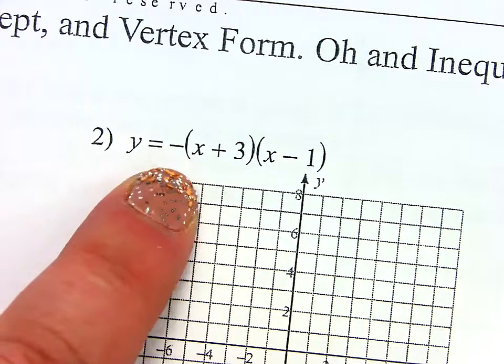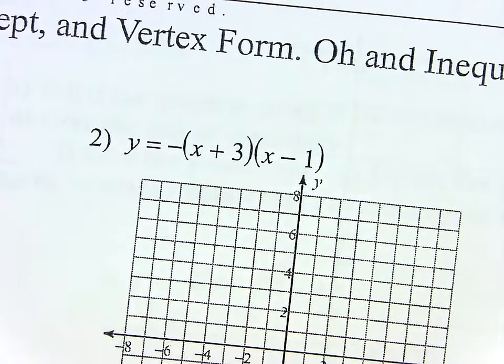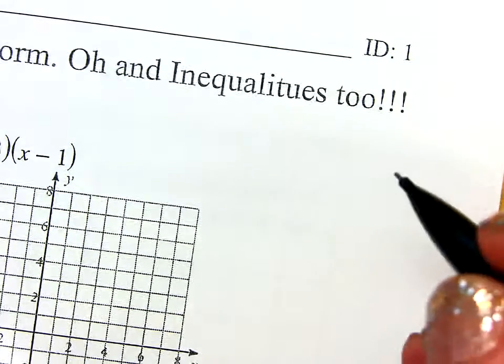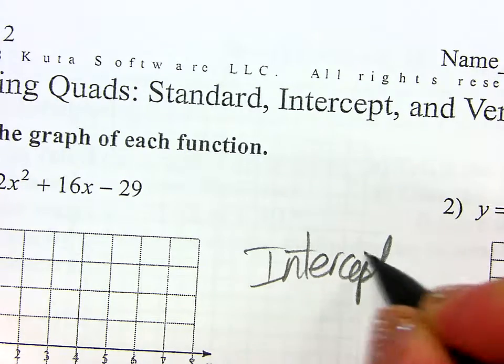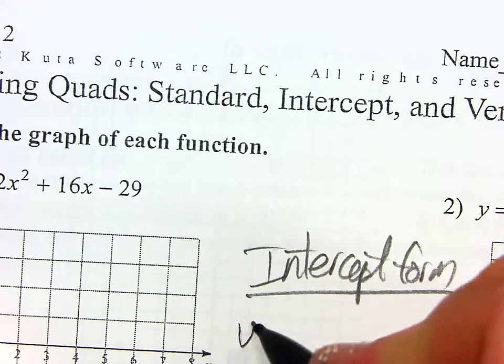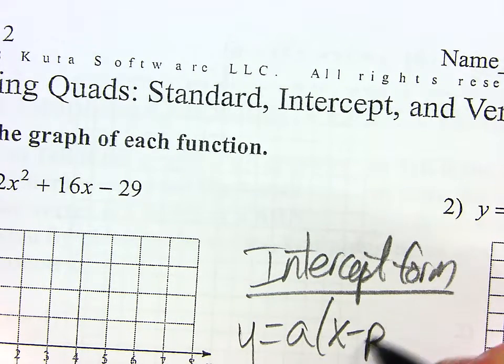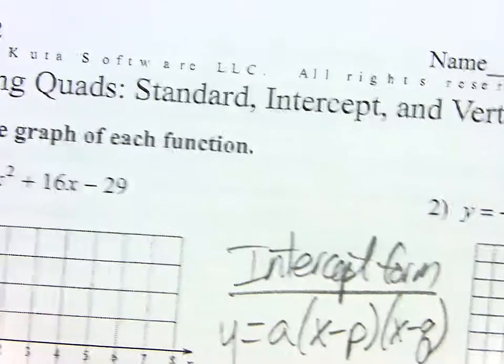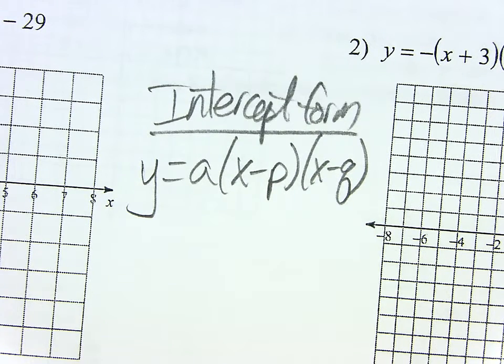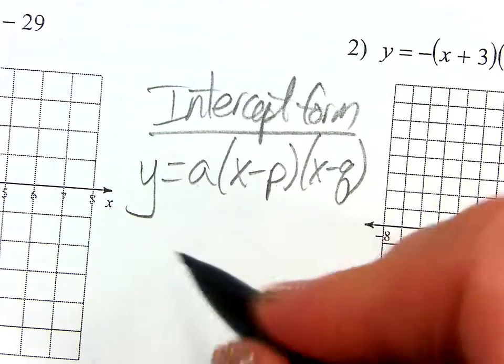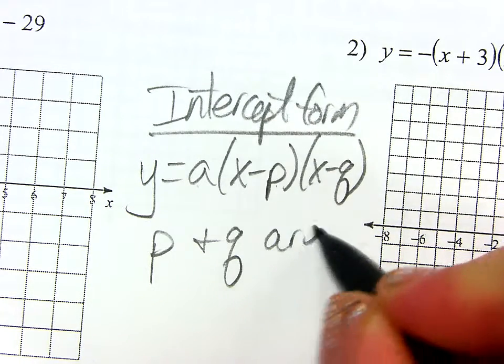So that's what intercept form is telling you. It's giving you not the vertex, but it's giving you the two X intercepts. So watch, I know you're probably wondering what's up with this negative out in front. Let me show you the general form of intercept form. It just looks like this: Y equals A, X minus P times X minus Q.